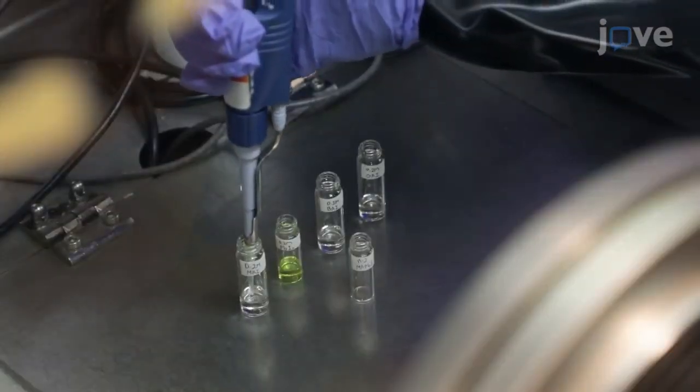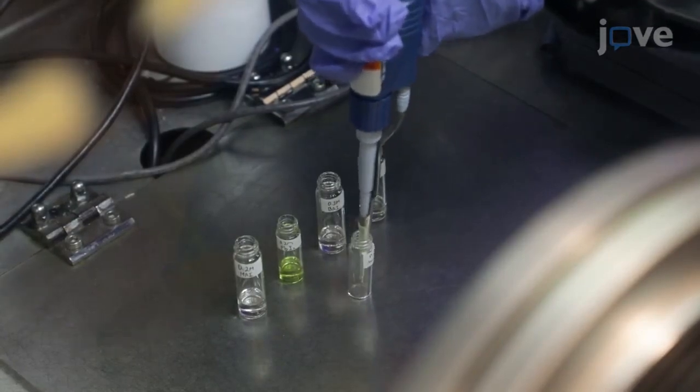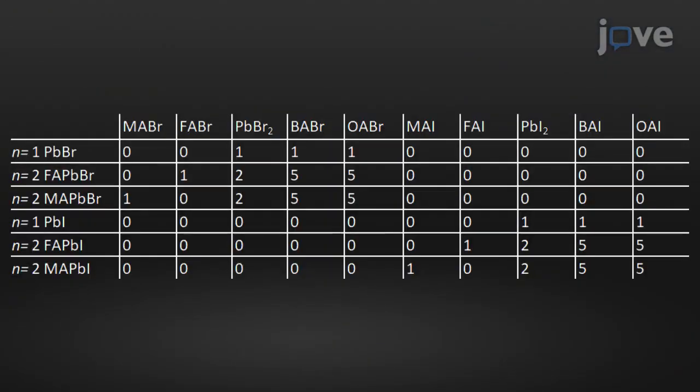To synthesize N=2 methyl ammonium lead iodide nanoplatelets, mix individual 1 milliliter volumes of the indicated 0.2 molar precursor solutions according to the table.